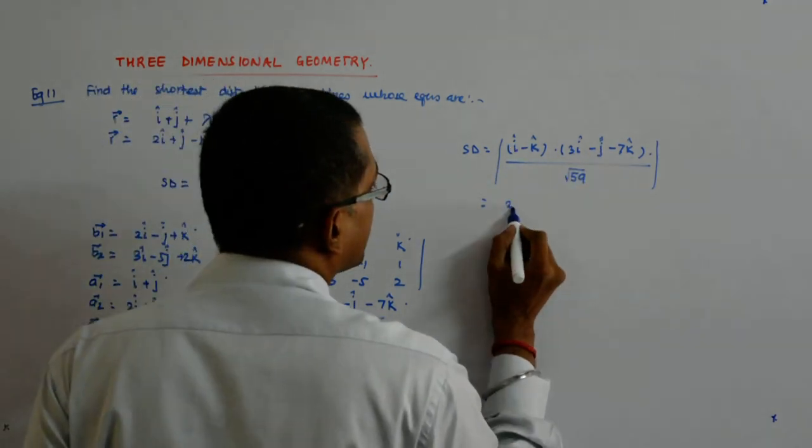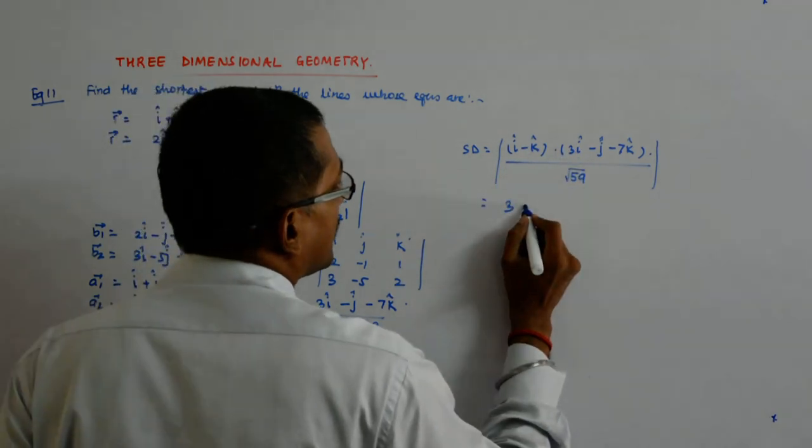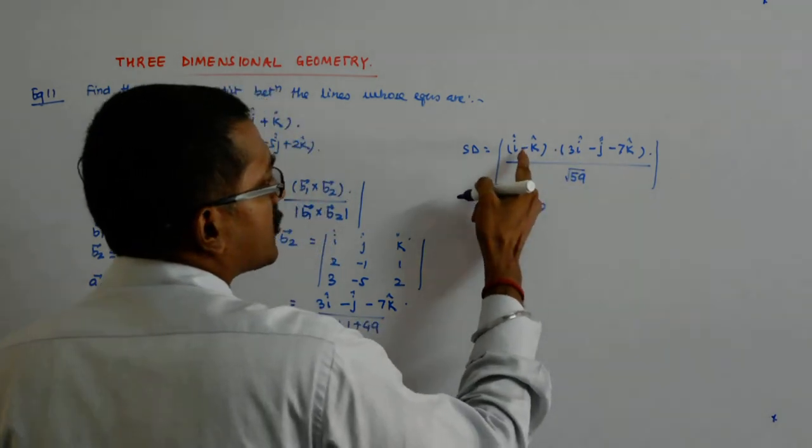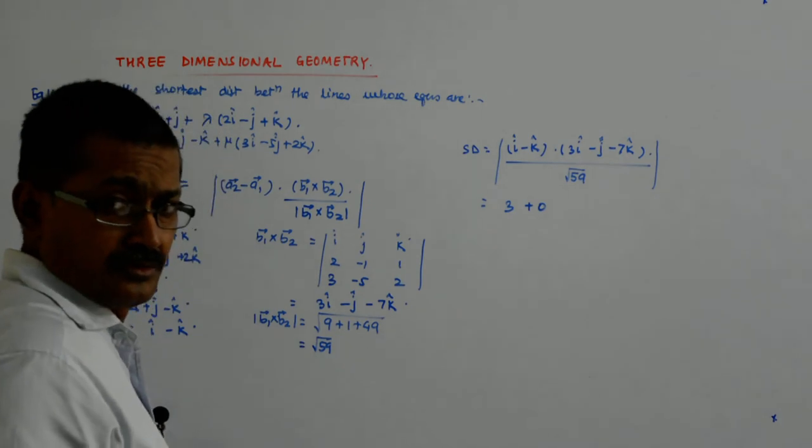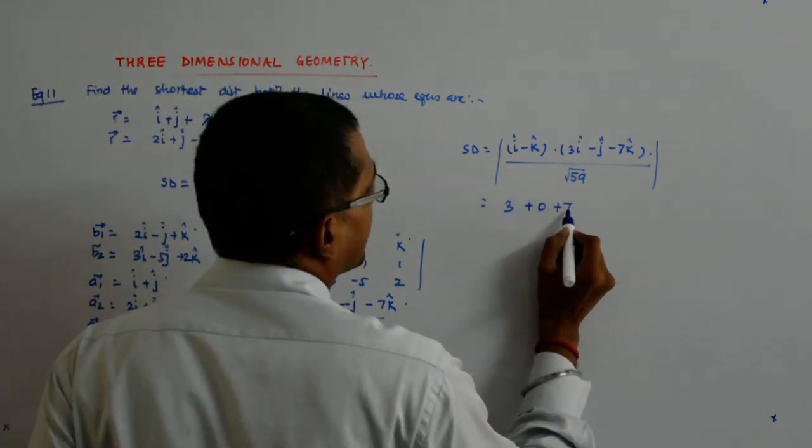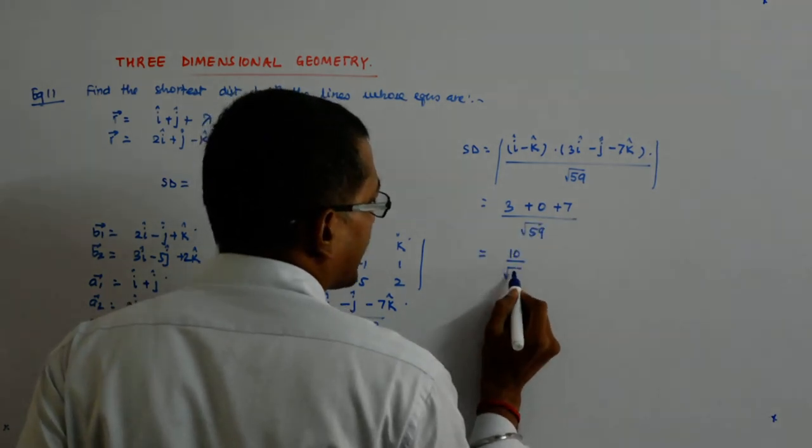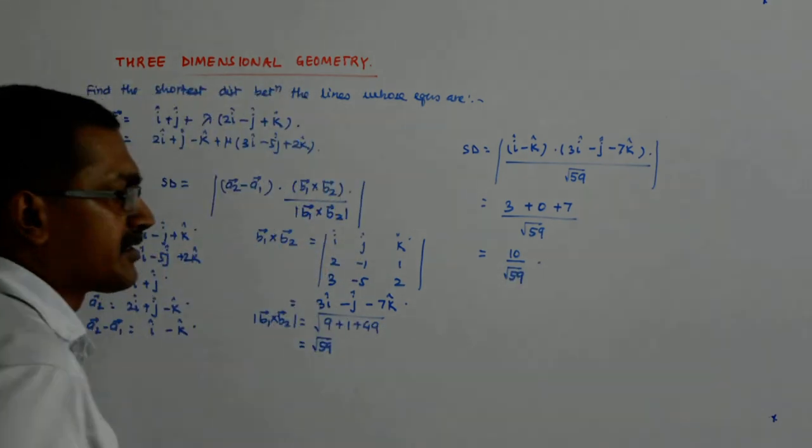So, 3i dotted is, this is 3 plus 0 because there is no j here. So, the coefficient is 0. Okay. And, minus 1 into minus 7 is plus 7 upon root 59. So, that gives me 10 upon root 59. This is the shortest distance. Do we get that?